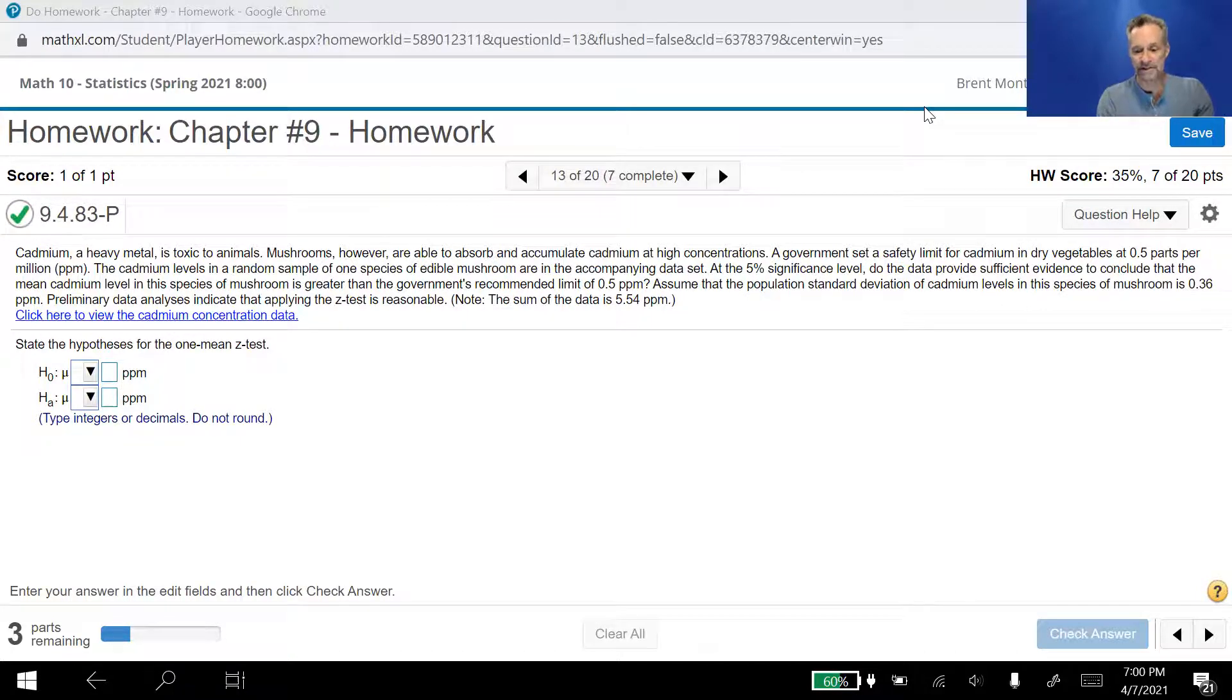At the 5% significance level, so that's our first thing that we need to talk about. This 5% significance level, that's alpha. So alpha equals 0.05. Do the data provide sufficient evidence to conclude that the mean cadmium level in this species of mushrooms is greater than the government's recommended limit of 0.5 parts per million? So here's the question: Is the mean cadmium level greater than the government's recommended level of 0.5 parts per million?